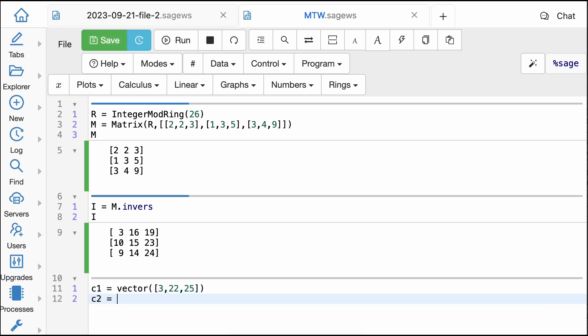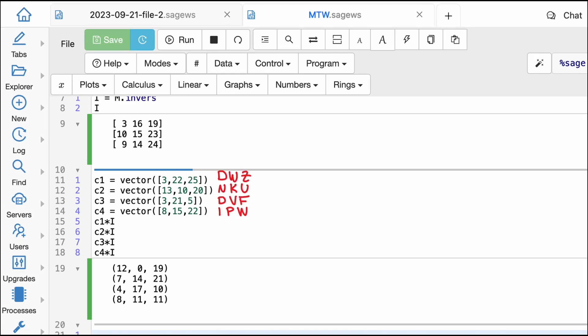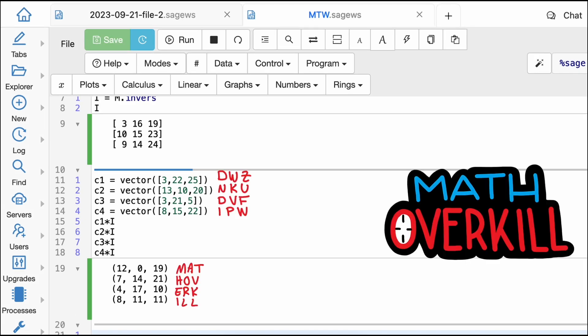Multiplying the vectors of our ciphertext by this matrix in mod 26 will return to us the original plain text vectors which are m-a-t-h-o-v-e-r-k-i-l-l or math overkill.